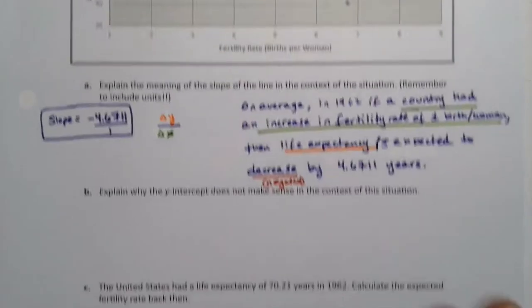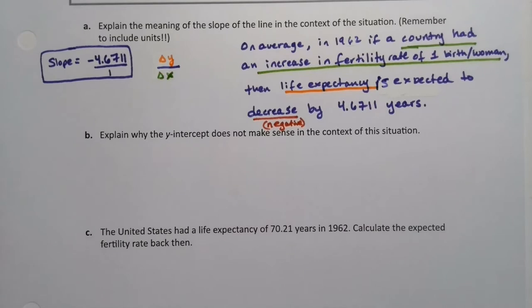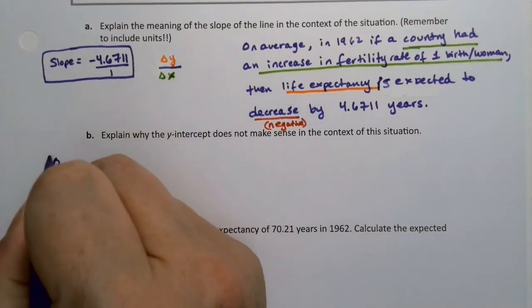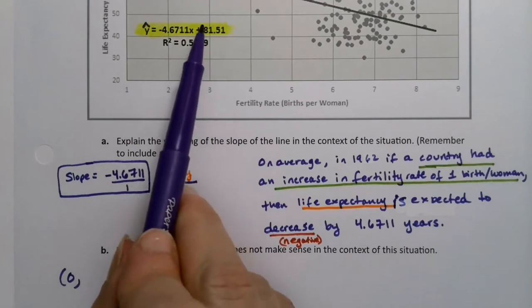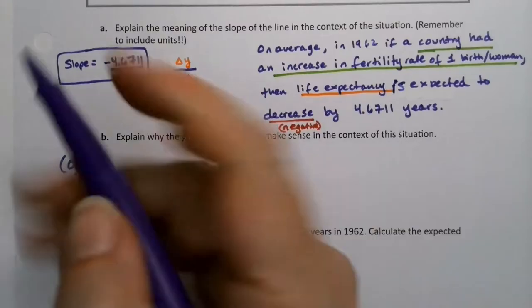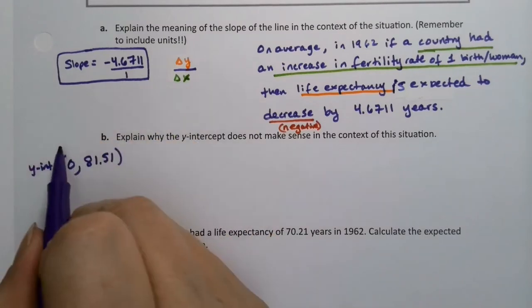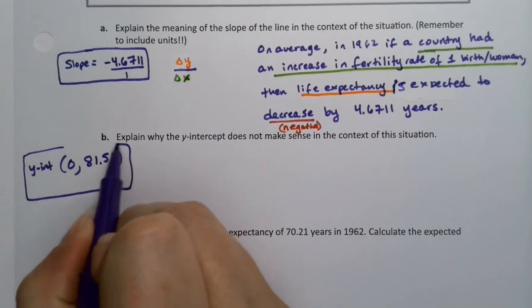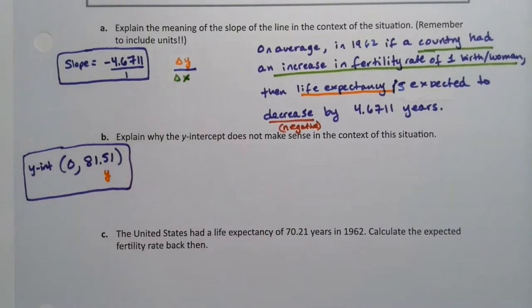Now what about the y-intercept? Well, the y-intercept is zero comma, and then it's the number that's off by itself, the constant, which is 81.51. That's the y-intercept. Now, just to give it a little labeling, this is the y, this is the x, and you have to explain both of those numbers.